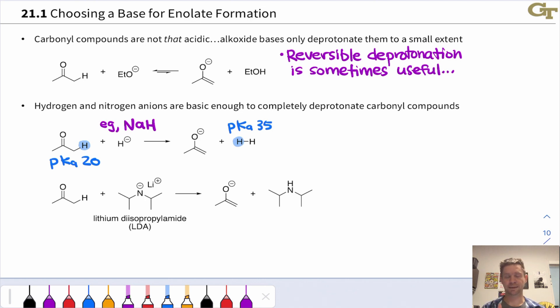It's also common to use amide bases with negative charge on a nitrogen, and lithium diisopropylamide or LDA is one that we'll use very, very commonly. Here again, we've got a pKa of about 35 in the conjugate acid of LDA, which is just diisopropyl amine, and the pKa of 20 for acetone. So again, this is a heavily favored reaction in the forward direction, and conversion to the enolate happens completely.